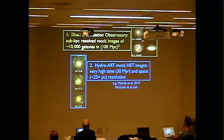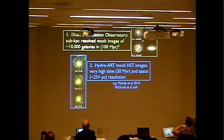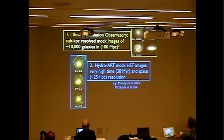The nice thing about that is I can use any kind of simulation. I'll be talking today about two particular efforts. The first is something we're coining the Illustris Simulation Observatory, riffing off of the Millennium Run Observatory and the Theoretical Astrophysical Observatory, to produce a large suite of mock images from the Illustris simulation resolved at sub-kiloparsec scales. We've started with about 10,000 galaxies at redshift zero in a volume of 100 megaparsecs on a side.